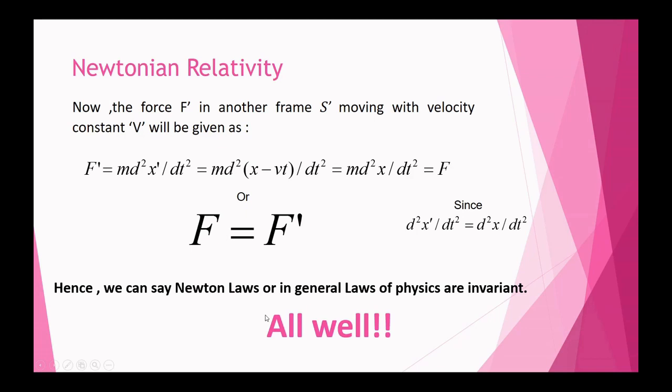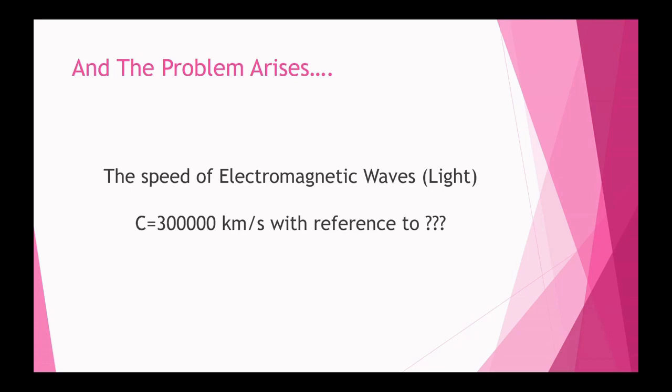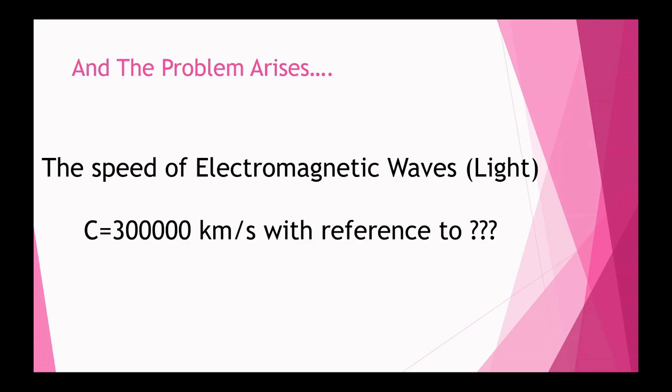The problem arises with the speed of electromagnetic waves or light, which travels at 300,000 kilometers per second — but with reference to what? That was the biggest problem predicted by Maxwell's equations.